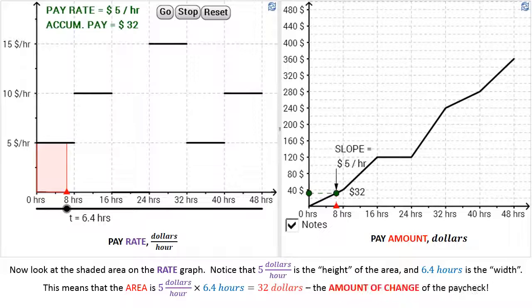Now, look at the shaded area on the rate graph on the left. You notice that $5 per hour is the height of that area, and 6.4 hours is the width. So this means that the area is $5 per hour times 6.4 hours equals $32. This is the amount of change of the paycheck.